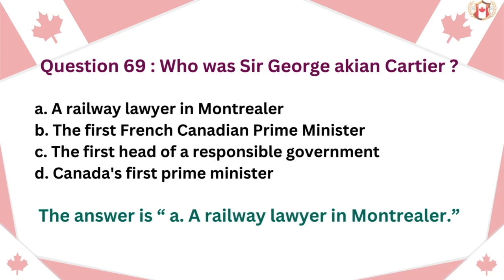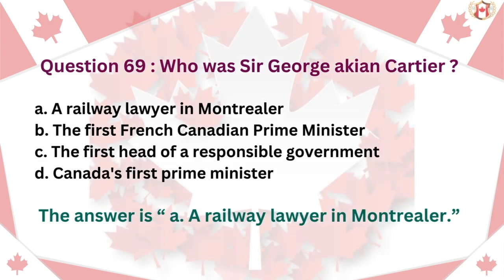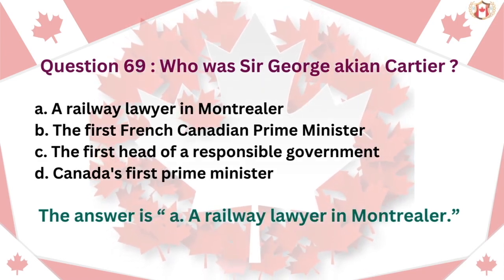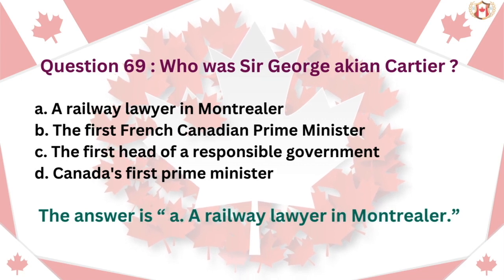Question 69: Who was Sir George-Étienne Cartier? A. A railway lawyer in Montreal, B. The first French Canadian Prime Minister, C. The first head of a responsible government, D. Canada's first Prime Minister. The answer is A. A railway lawyer in Montreal.